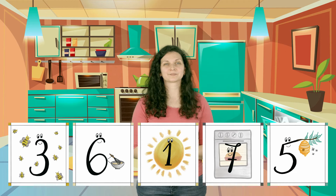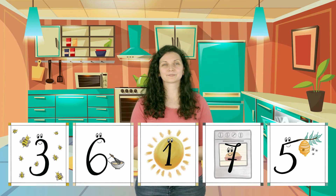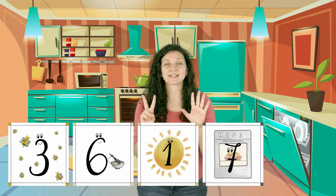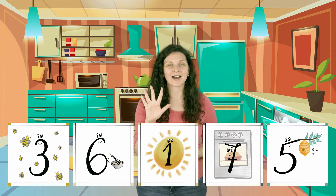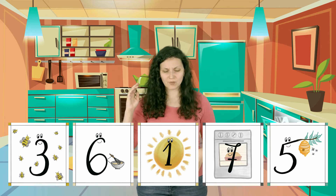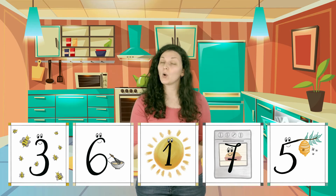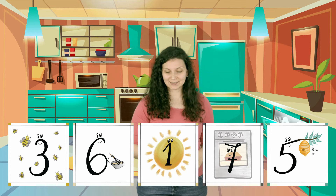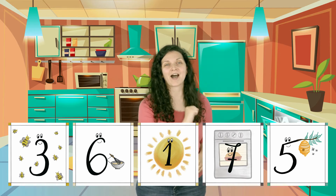All right, we have: three, one, three, six, one, seven, and five. You can read it as: three, six, one, seven, five. Or you can say: three, mix six, sun one, oven seven, five. Okay, all right, last one — go ahead.